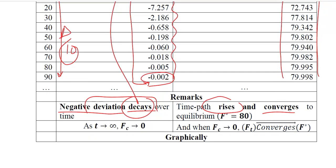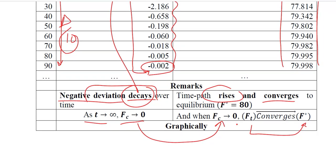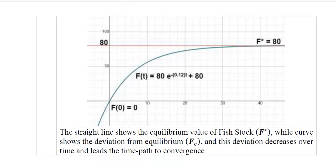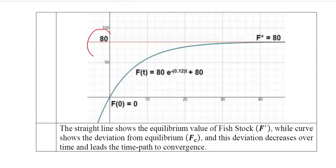As time passes, the complementary function will decrease and as the deviation decreases, the time path will converge to the equilibrium. So convergence is taking place. This is the equilibrium and this is the time path which is now increasing and it is coming towards the equilibrium.